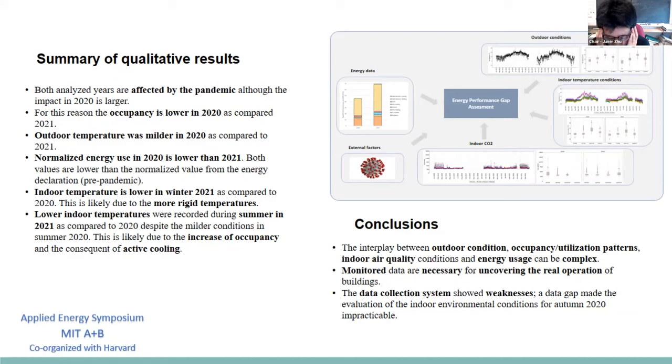In conclusion, the interplay between the outdoor conditions, occupancy utilization patterns, indoor air quality conditions and energy usage can be complex. And the monitored data are necessary for uncovering the real operation of buildings and potentially finding problems. And also another thing that we saw that was interesting is that the data collection systems can fail and there are potential weaknesses that should be addressed.